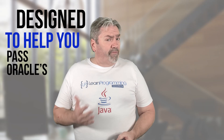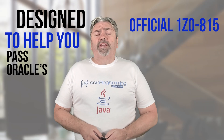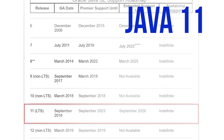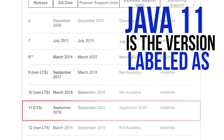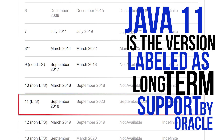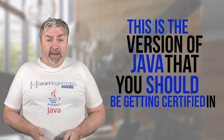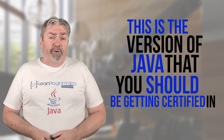This course is designed to help you pass Oracle's official 1Z0-815 Java 11 exam. 1Z0-815 is Oracle's designation for the exam, in case you're wondering. Java 11 is the version labeled as long-term support by Oracle, and as such, this is the version of Java that you should really be getting certified in, in 2019 and beyond.